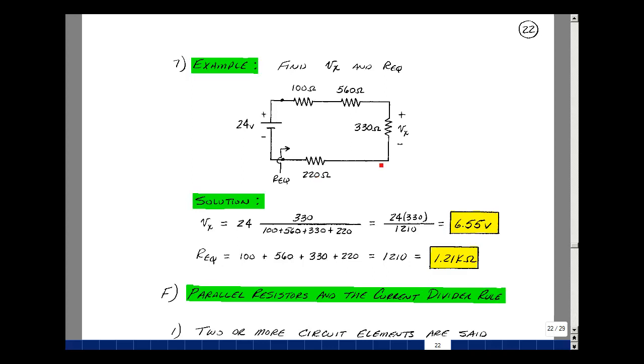So the voltage across the 330 is 330, that value of resistor, over the sum of the 1, 2, 3, 4 resistors, times the voltage, 24. 24 times 330, and the sum of this turns out to be 1,210. And that gives you a voltage of 6.55.